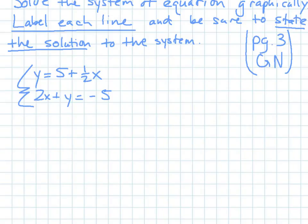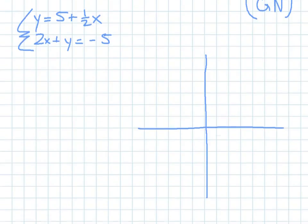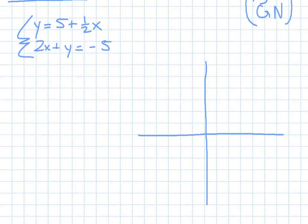Once you have it out, start it again. So here, I have y equals 5 plus 1 half x, and 2x plus y equals negative 5. Now, on your guided notes, you already have an x, y coordinate plane set up for you. I just have to draw my own. So here, you can graph these however you want. I'm going to do it two different ways. The first one is set up for slope-intercept form, so I'm going to graph it that way.